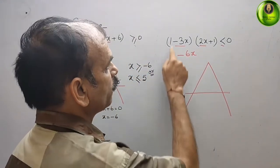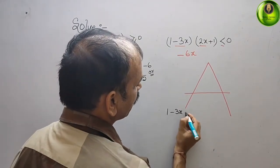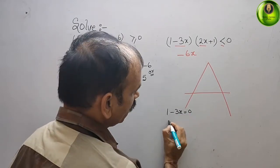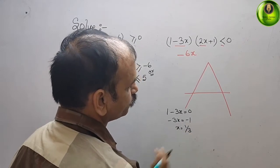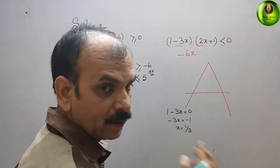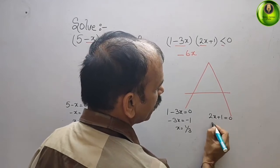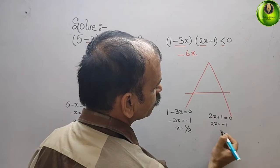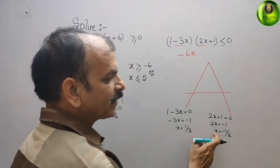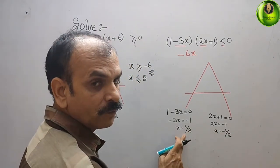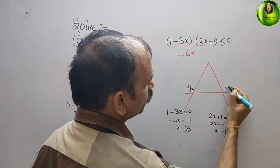Now we find the values of x from both factors. For 1 minus 3x equals 0: minus 3x equals minus 1, so x equals 1 by 3. For the second factor, 2x plus 1 equals 0: 2x equals minus 1, so x equals minus 1 by 2. The negative value minus 1 by 2 is always to the left of positive 1 by 3 on the number line.